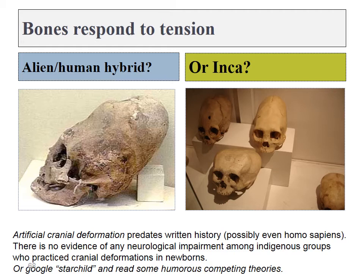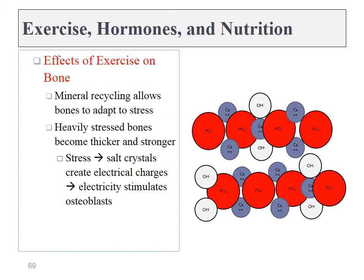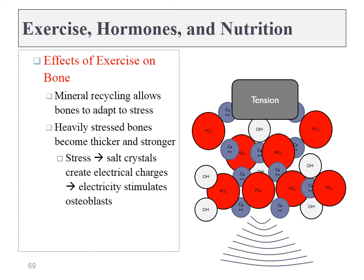Here are a couple of examples of ways to put pressure on bones without using muscles. A number of Native American tribes have a history of placing the skull bones under pressure using boards and ropes, and this leads to growth of the skull bones. The way this happens is that when pressure is placed on bone tissue, it pushes ions closer together, leading to electrical gradients. These electrical gradients are detected by osteoblasts, which in response lay down new bone tissue.